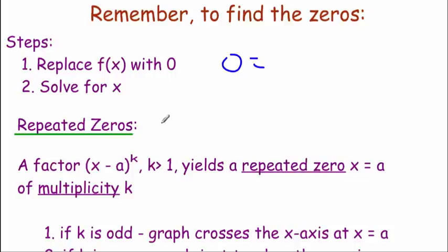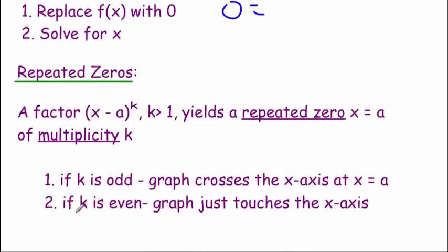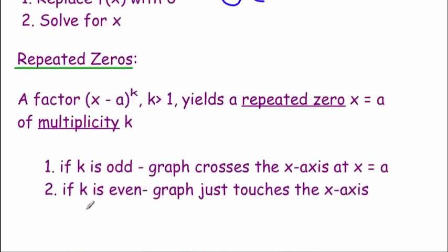With this we're going to have things called repeated zeros — zeros that show up multiple times. If we've got a factor of (x minus a) raised to the k power where k is greater than one, that gives us a repeated zero of x = a, and that k value — the number of times it shows up — is called its multiplicity. If k is odd, our graph is going to cross through the x-axis at x = a, but if k is even, our graph just barely touches the x-axis at that value.